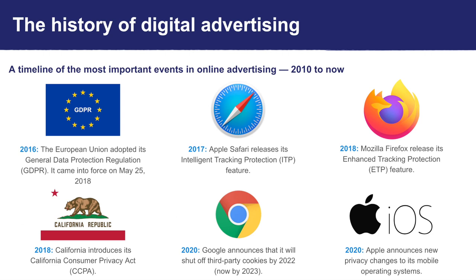The main theme in programmatic advertising over the past few years has been privacy. Various governments around the world have introduced new privacy laws and regulations to strengthen user privacy, and large tech companies have also taken action. In 2016, the European Union adopted its General Data Protection Regulation, or GDPR, which was then enforced on May 25, 2018. The goal of the GDPR is to give EU citizens and residents more control over their personal data and strengthen user privacy. The EU's GDPR is often seen as the catalyst for the introduction of other privacy laws in other parts of the world.